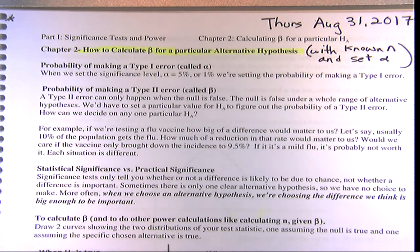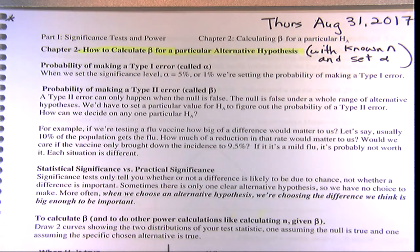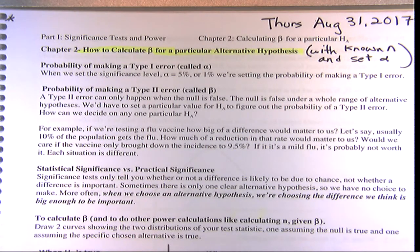The Type 1 error is also known as the significance level alpha, or a p-value — all those things you've had in Stat 100. Raise your hand if you've heard of a p-value or significance level. That's the old stuff from Stat 100. What I'm now introducing is the Type 2 error.